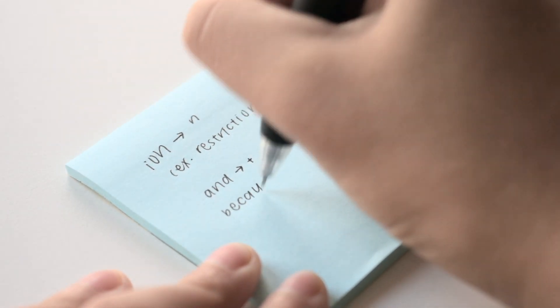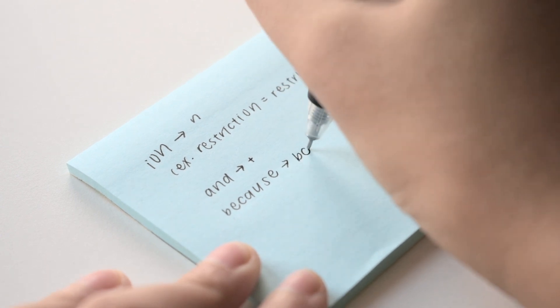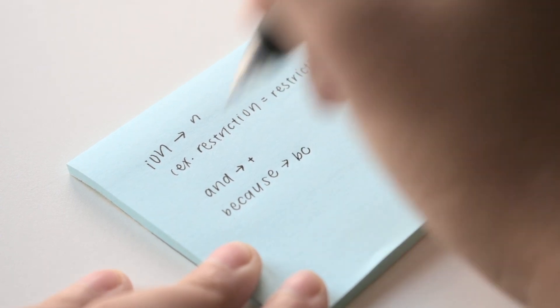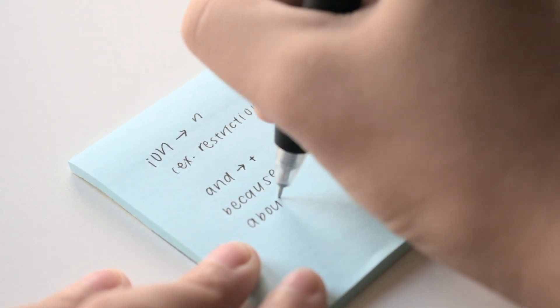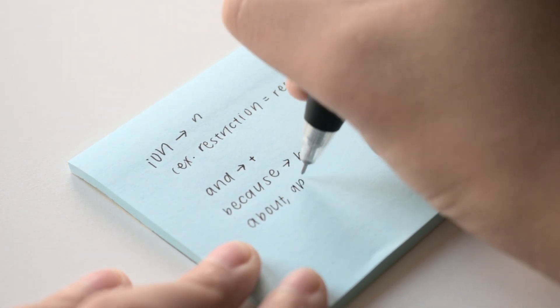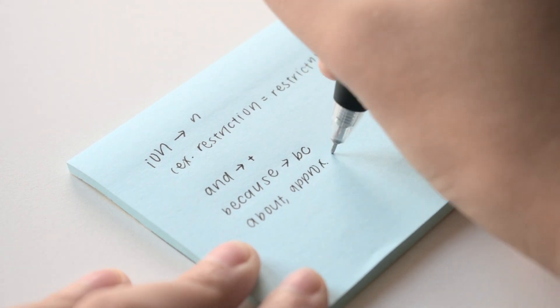There are some super complicated shorthand systems out there, but I think making up your own symbol and abbreviation system is the most effective, because you'll remember it and it'll make more sense to you. Here are some examples of symbols and abbreviations that I use.